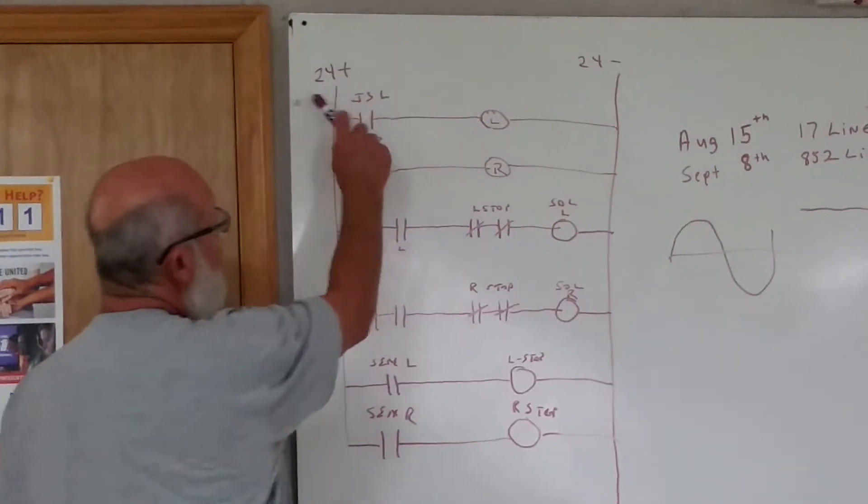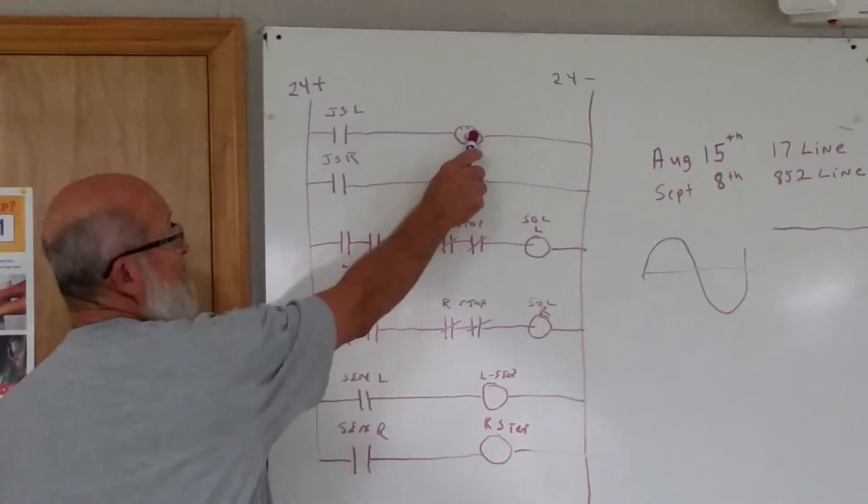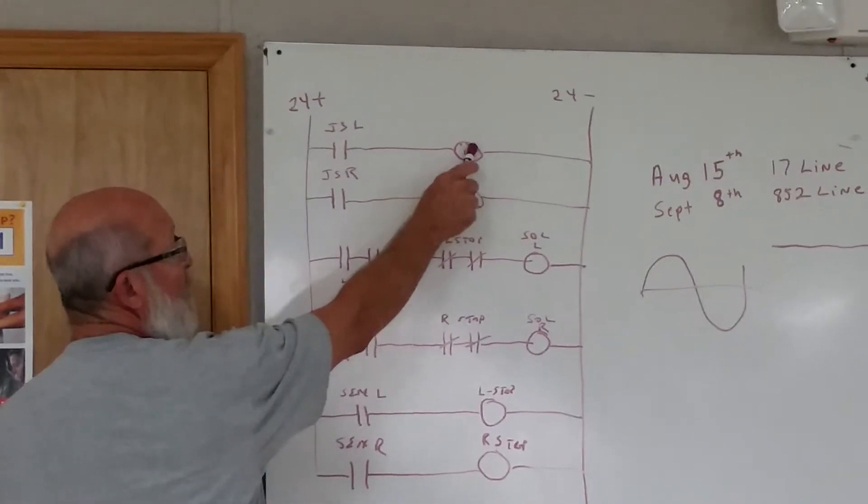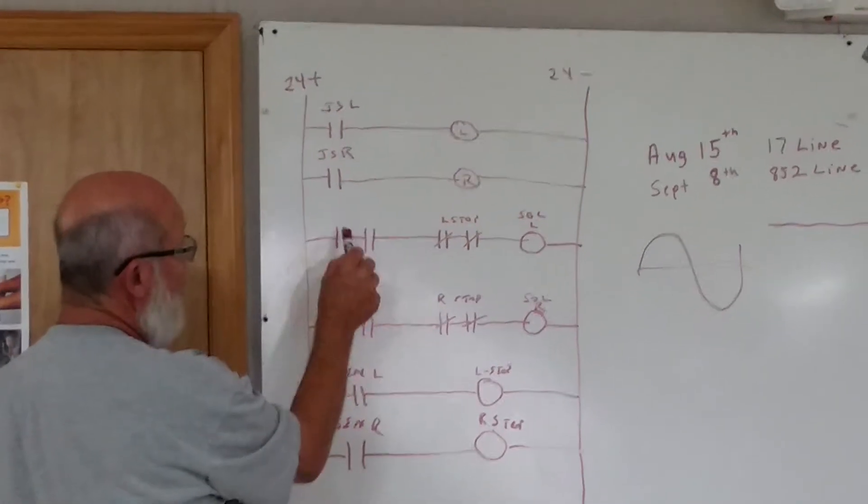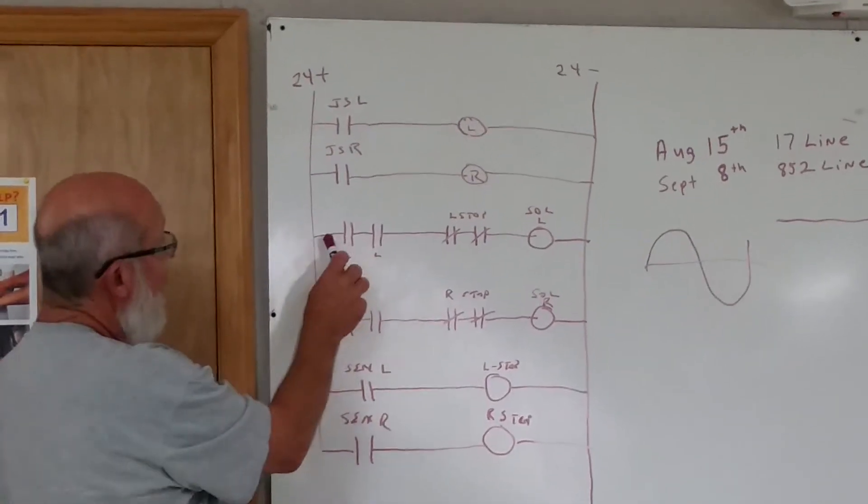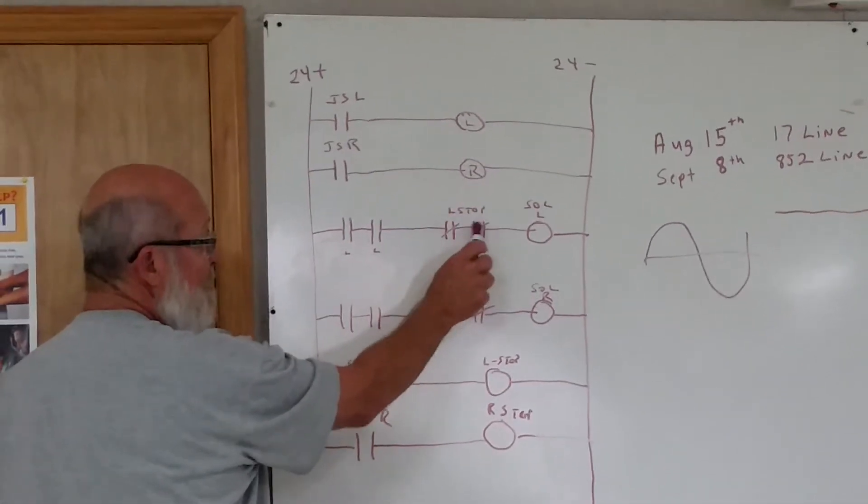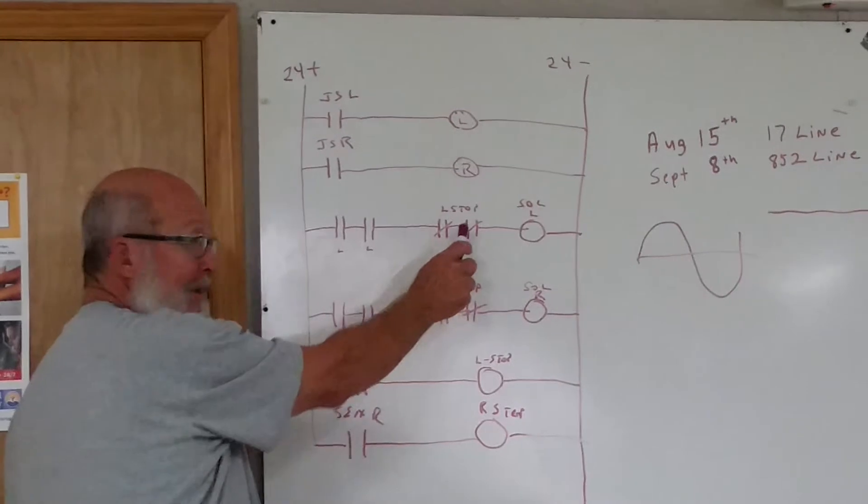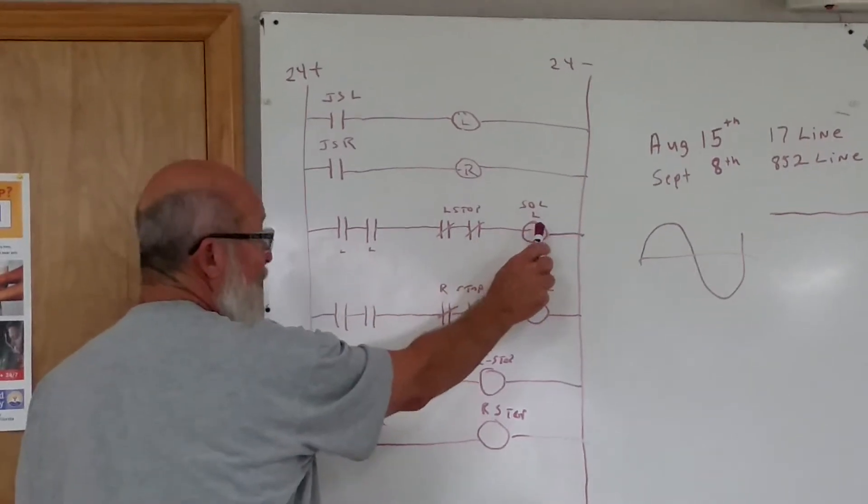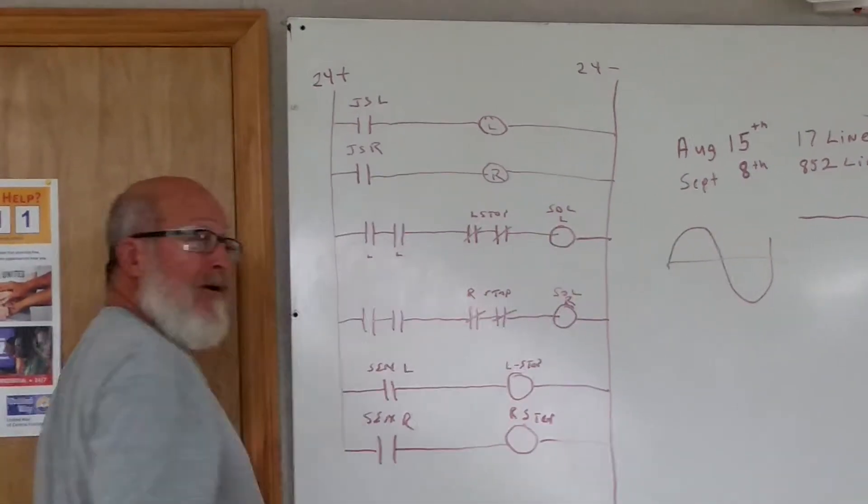So anyway, the way it works: when you hit the joystick to the left, it energizes this coil. When this coil energizes, it comes down there and closes these two. So current then flows through. Now the L-stop is on a set of two normally closed contacts. It'll come down here and energize the solenoid left.